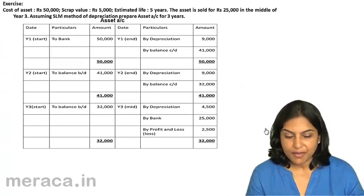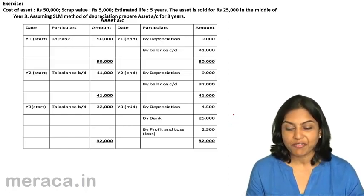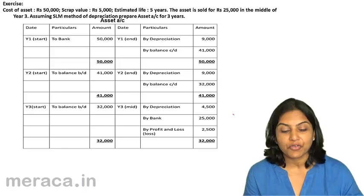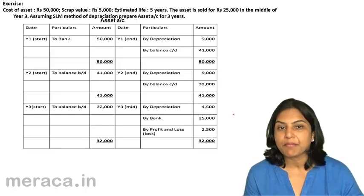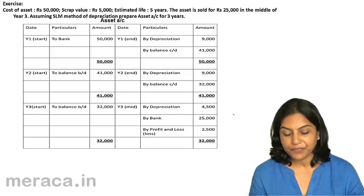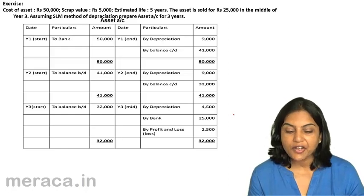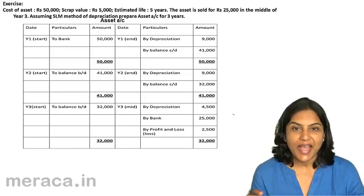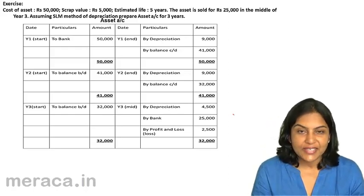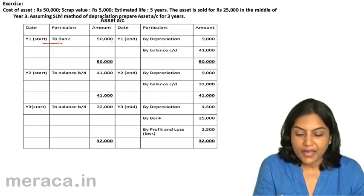Let us consider an example. Cost of the asset is $50,000 with a scrap value of $5,000 and an estimated life of 5 years. The asset is sold for $25,000 in the middle of year 3. Assuming straight line method of depreciation, we prepare the asset account for 3 years. In year 1, we purchase the asset — entry is asset account debit to bank for $50,000.